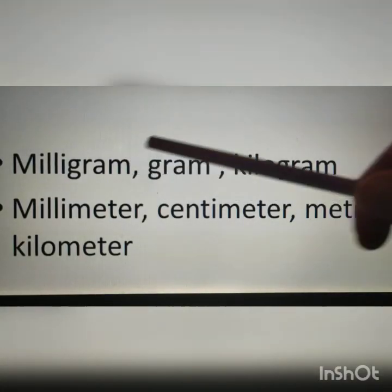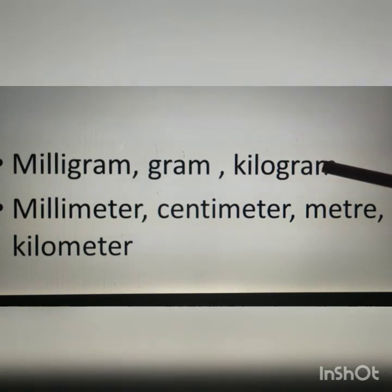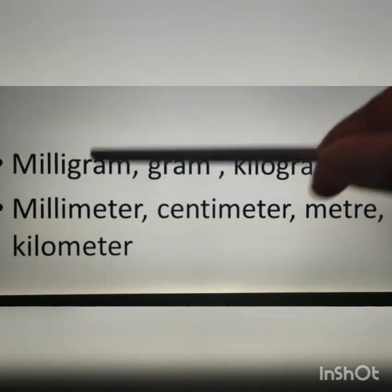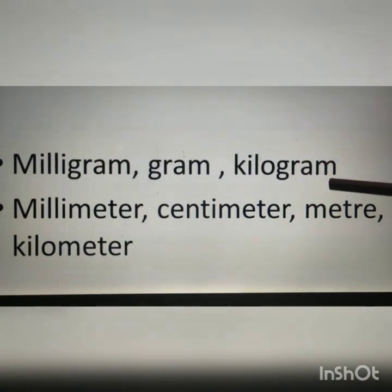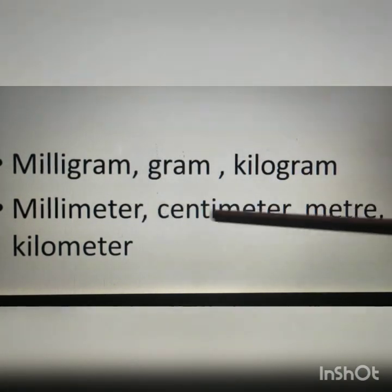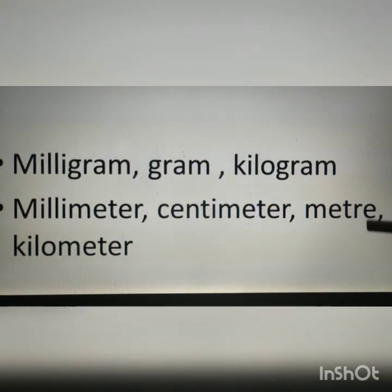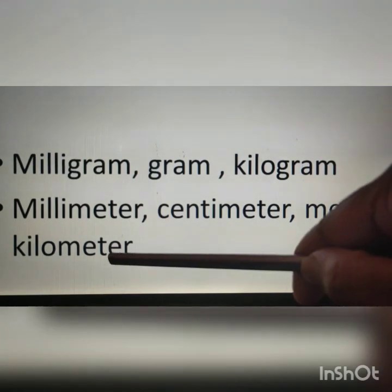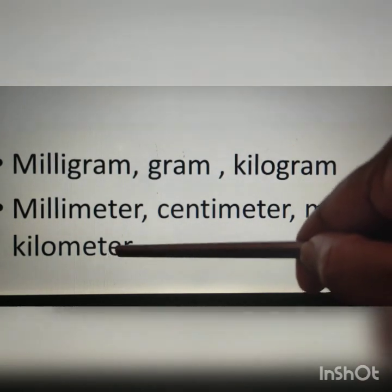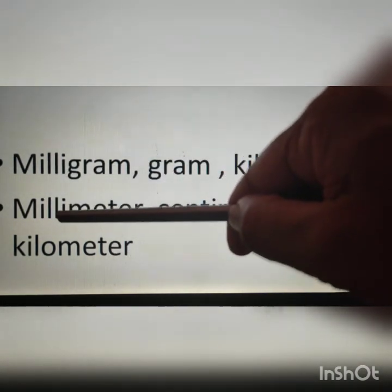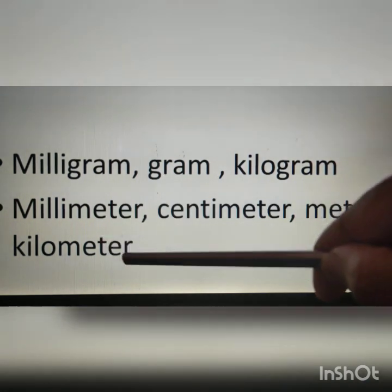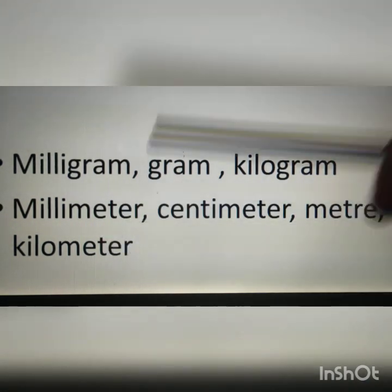Milligram, gram, and kilogram are the units of weight. Here, milligram is the smallest unit and kilogram is the largest unit. Similarly, millimeter, centimeter, meter, and kilometer are the units of length. Here, millimeter is the smallest unit and kilometer is the largest unit.